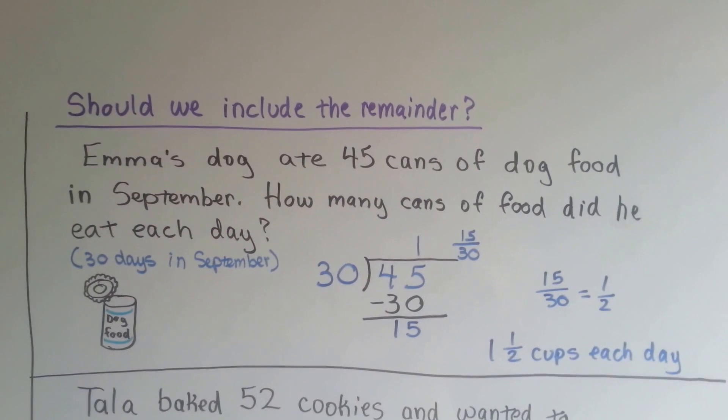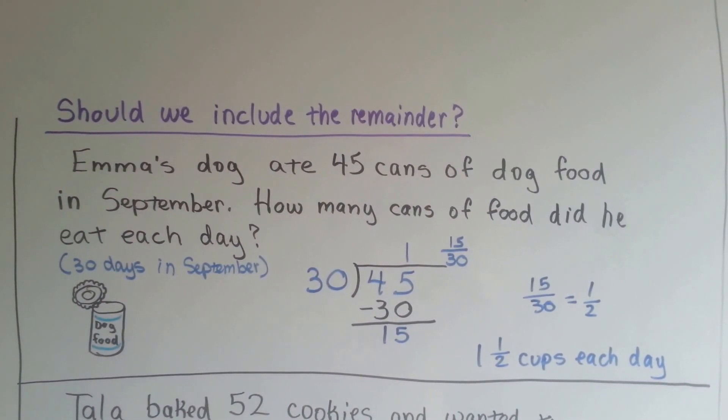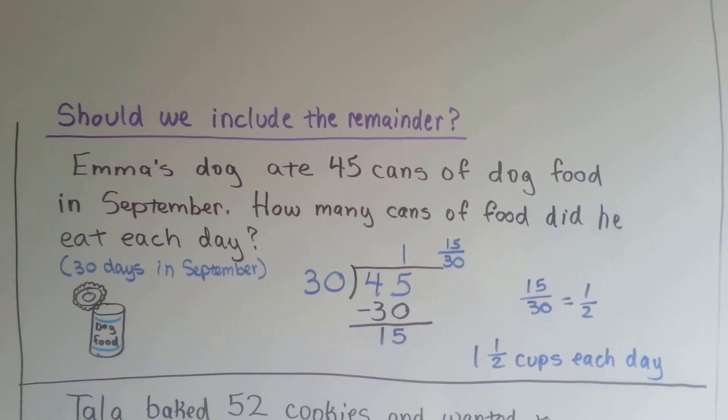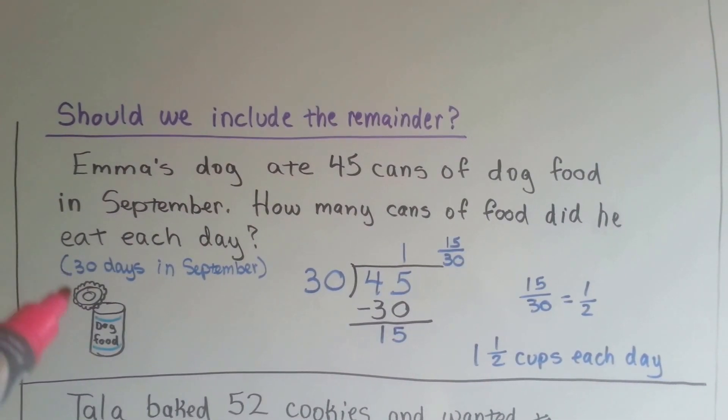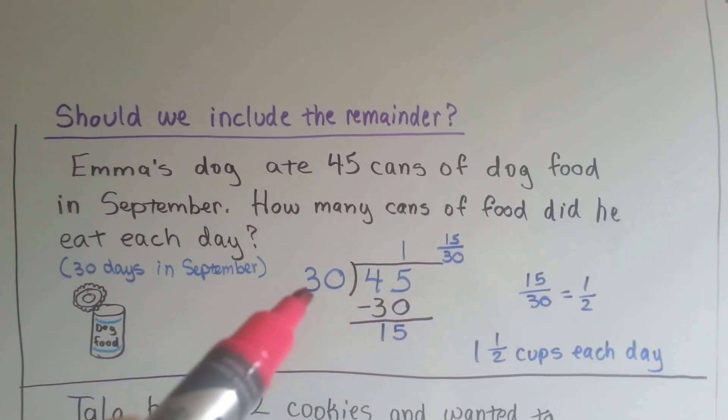So should we include the remainder? Emma's dog ate 45 cans of dog food in September. How many cans of food did he eat each day? Remember, there's 30 days in September, April, June, November. So that's 30. So 45 cans divided by 30.